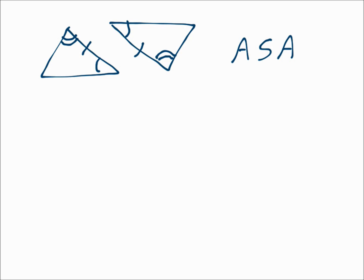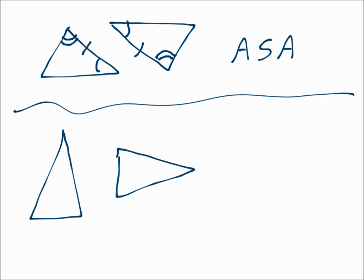Those triangles are congruent. If you have two triangles where you have one pair of angles, the very next pair of angles, and the next pair of sides, that's angle-angle-side, and those triangles are congruent.